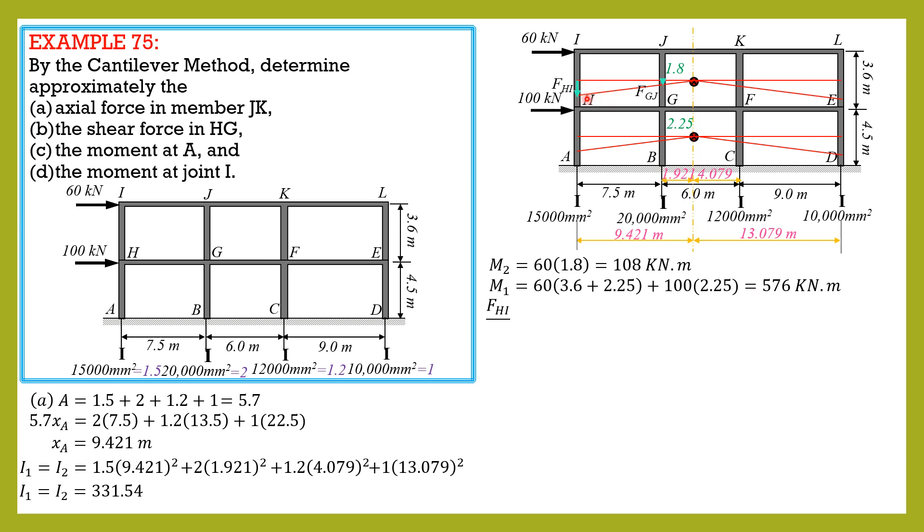So for fhi divided by area which is 1.5 equals moment at level 2, 108, then xa which is 9.421 divided by i, from my over i from mechanics of materials. But the distance of area 1, this area here, is 9.421 and that's the moment of inertia. So fhi is equal to 4.603 kilonewtons.